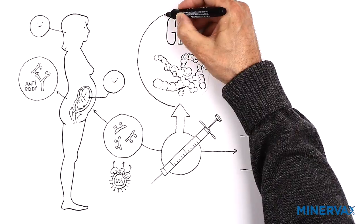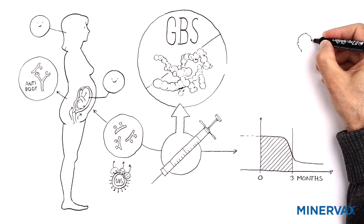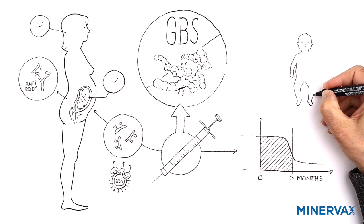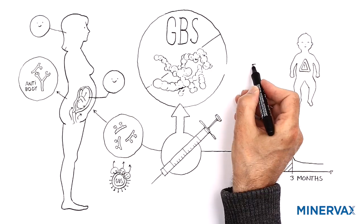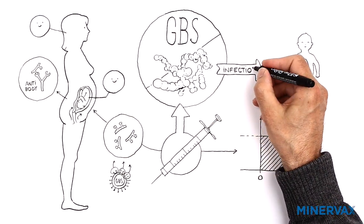Therefore, a maternal GBS vaccine could protect against stillbirths and preterm delivery as well as protecting the baby against life-threatening infections by GBS.